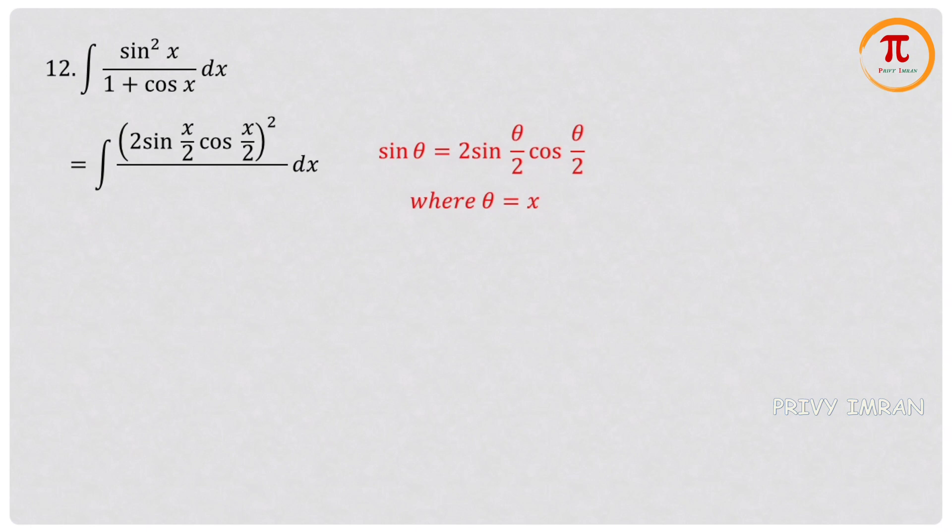And again, if you observe in denominator, 1 plus cos x is available. 1 plus cos θ equals 2 cos²(θ/2), where θ equals x. Now let me apply in my denominator.